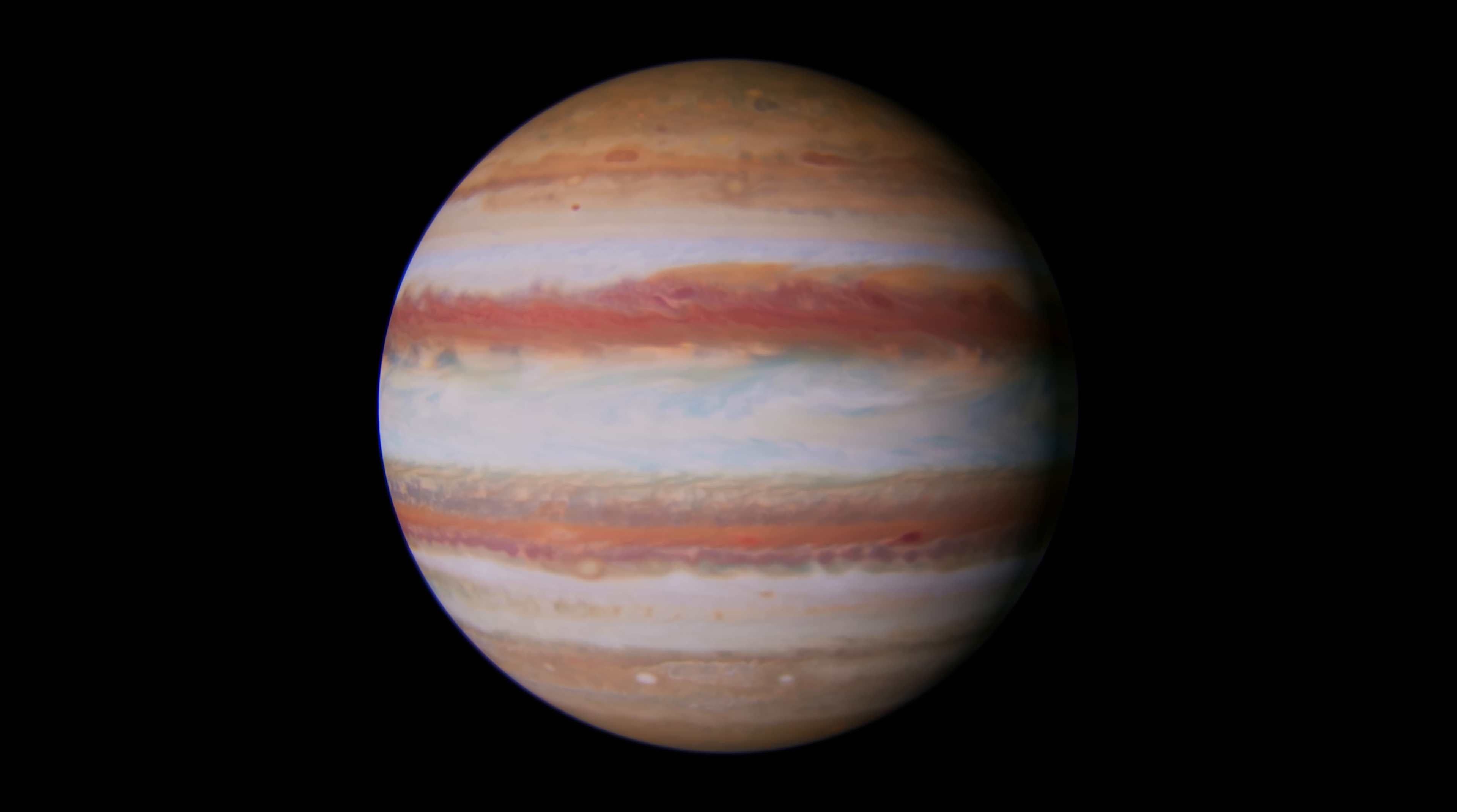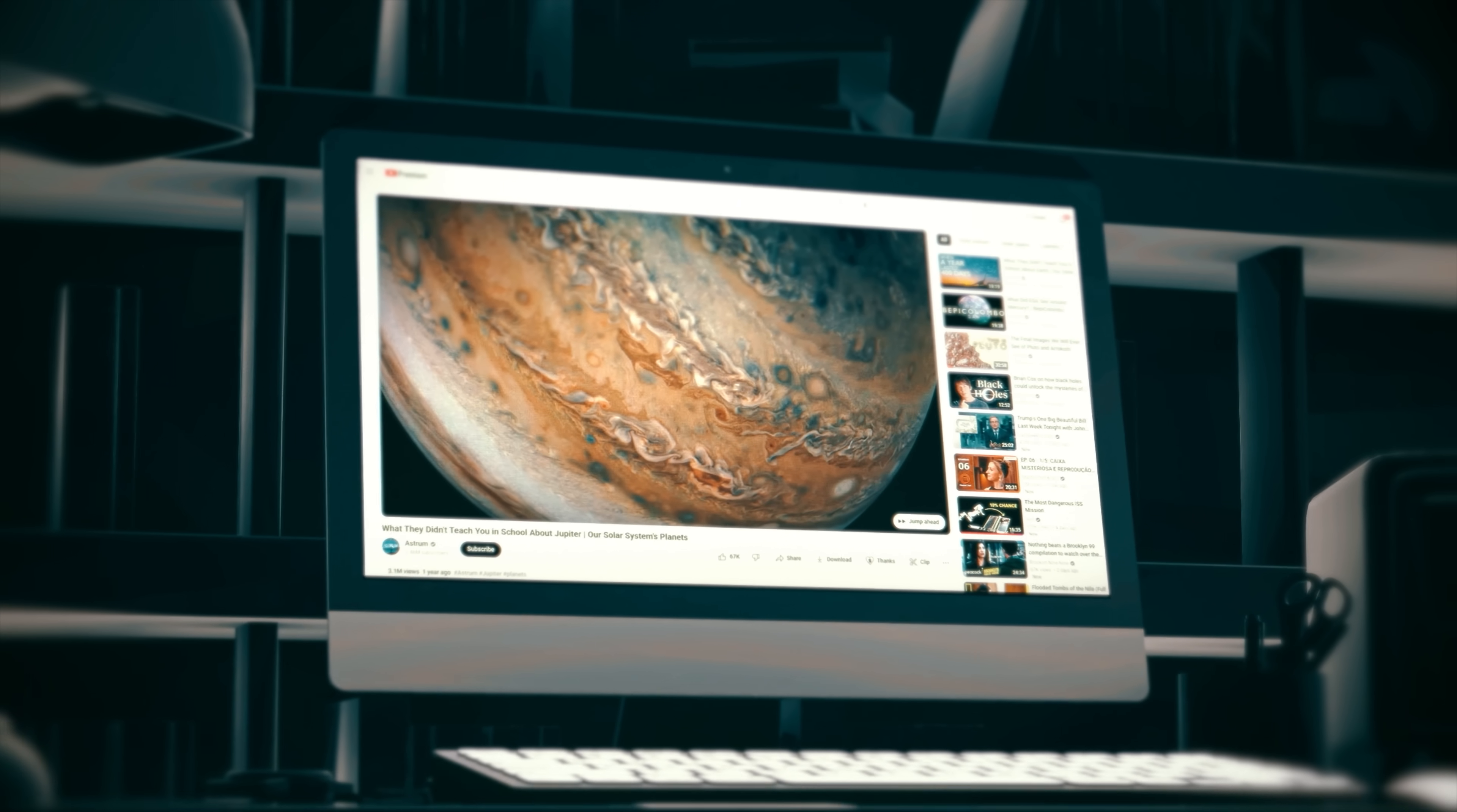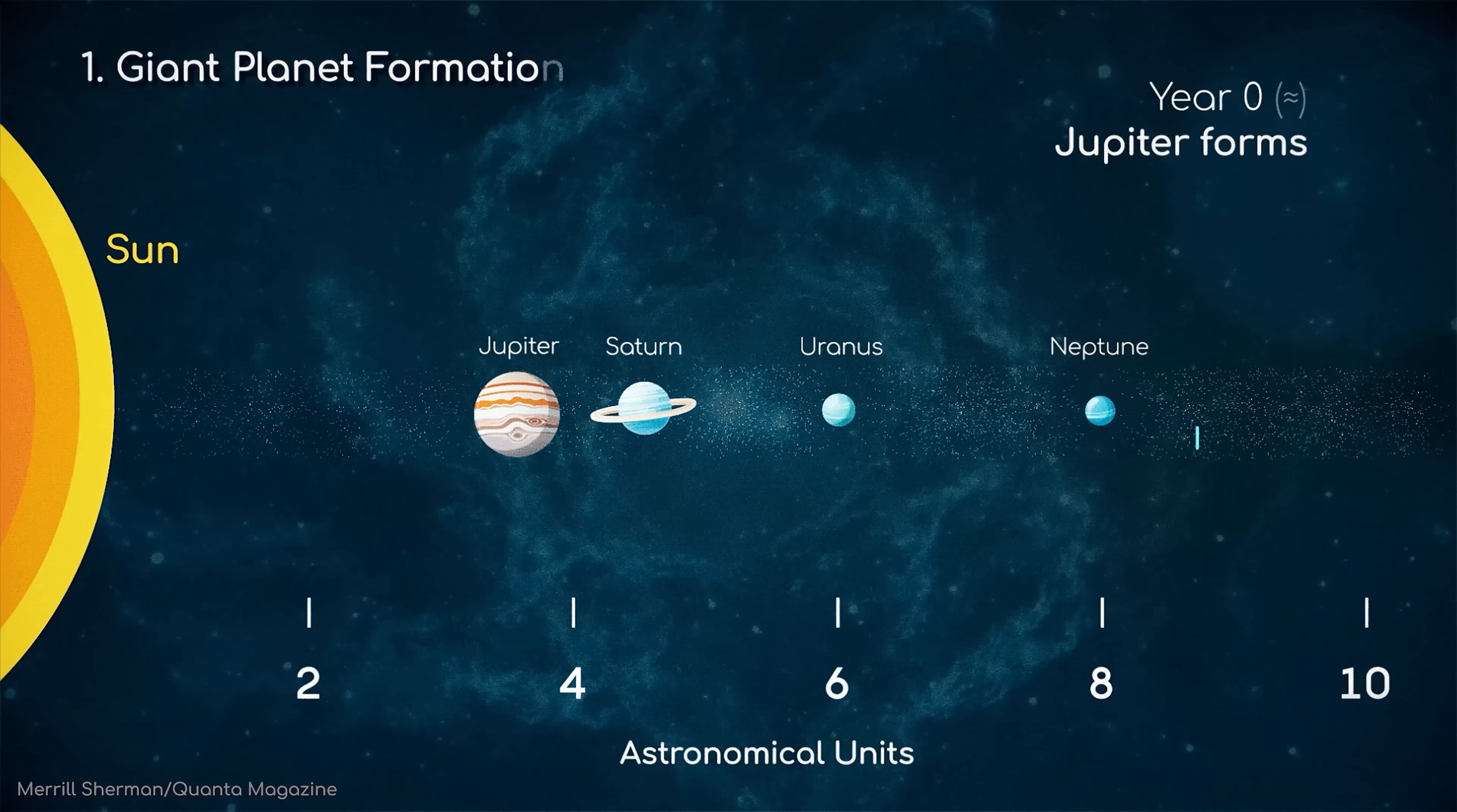The finger of suspicion points towards Jupiter, the largest planet in our solar system with more than two and a half times the mass of all the other planets combined, and the first to form, along with Saturn, as our solar system took shape. If you would like to learn more about Jupiter and its influence on our solar system, check out this video. The suspected behaviour of Jupiter is key to explaining the observations that have led to the proposal of the Late Heavy Bombardment Theory.